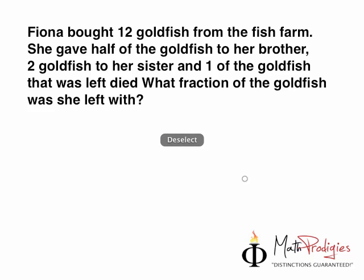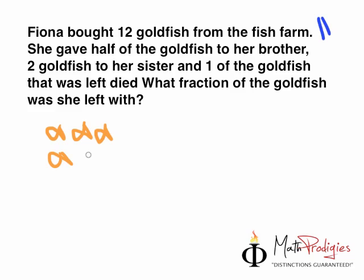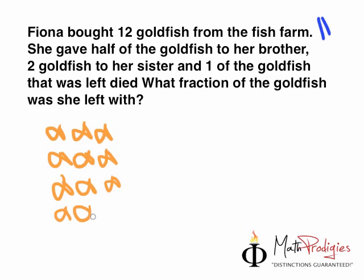So, how do we do this question? First off, like I told you before, you read line by line. The first line says that Fiona bought 12 goldfish from the farm. So let's imagine that Fiona had 12 goldfish — and let's not just imagine, let's draw this right now. So she had 12 — 1, 2, 3, 4, 5, 6, 7, 8, 9, 10, 11, and 12. She bought 12 goldfish from the fish farm and she put them into a fish bowl.